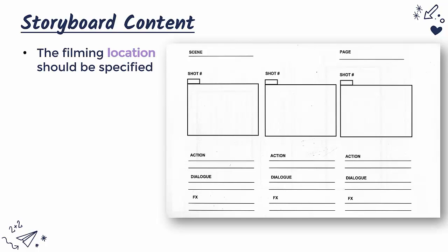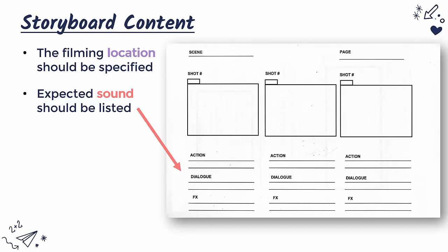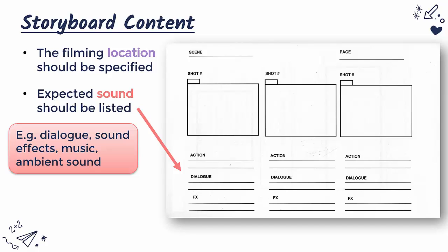You can also include the actual location where you are planning on filming — is it inside a set, a café, a train station? You can specify this in and around your storyboard. You'll also want to list expected sound. A script will cover this in more detail, but the storyboard can include a quick summary: dialogue, sound effects, background music, and ambient sound. Ambient sound is background noise — if you're in a station you'd expect to hear people chatting and trains coming in.